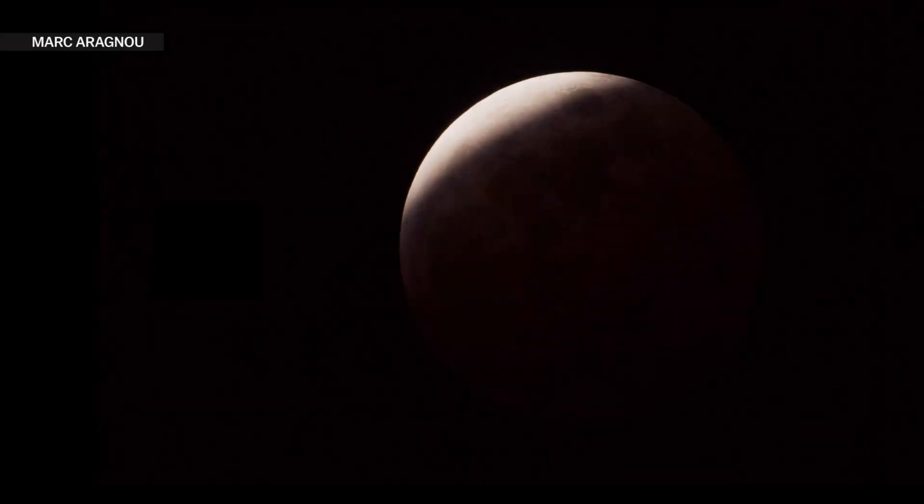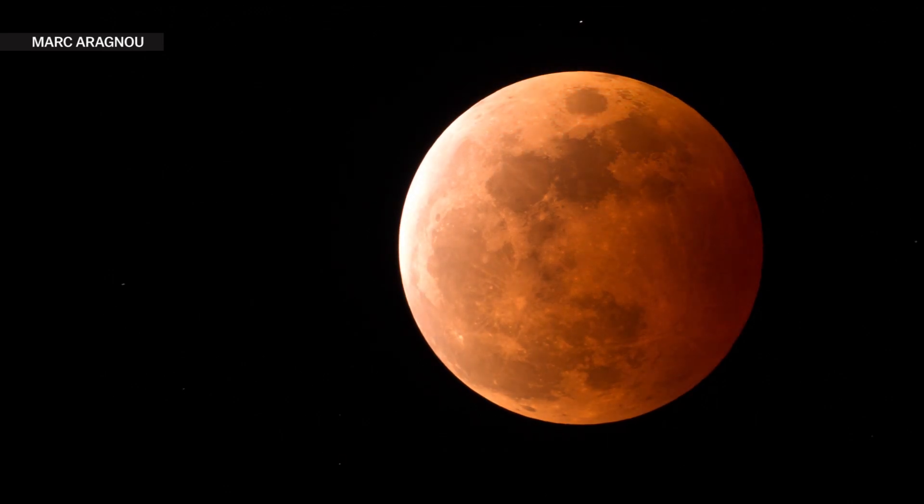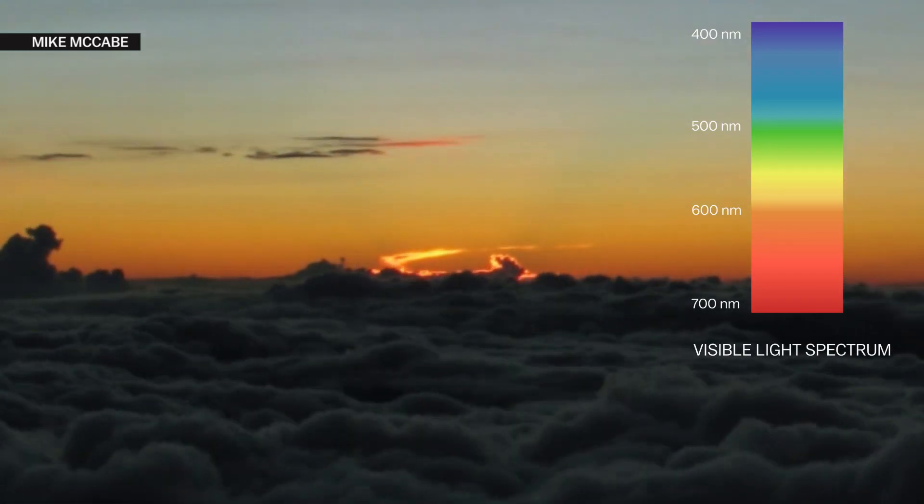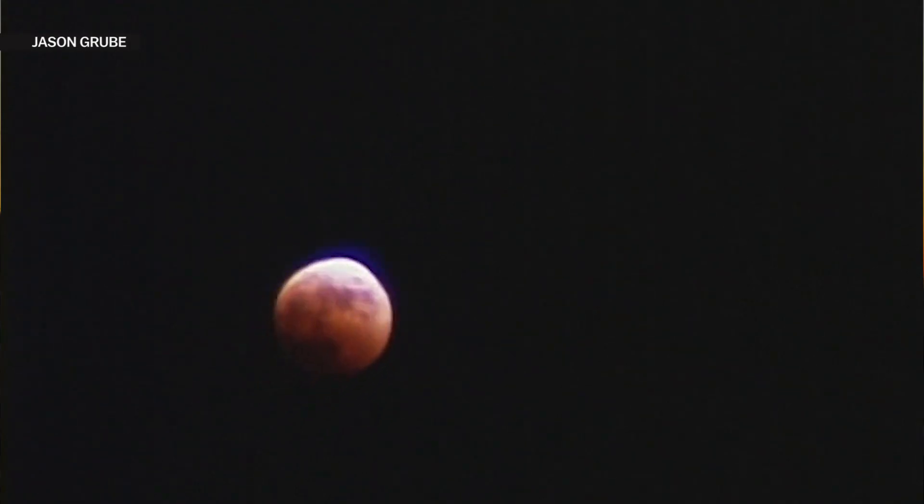During a total lunar eclipse, the moon often turns red. If we didn't have an atmosphere, the moon would go completely dark, but the gas molecules in our air scatter the shorter, bluer wavelengths of light, while the longer, redder wavelengths pass through to the moon.